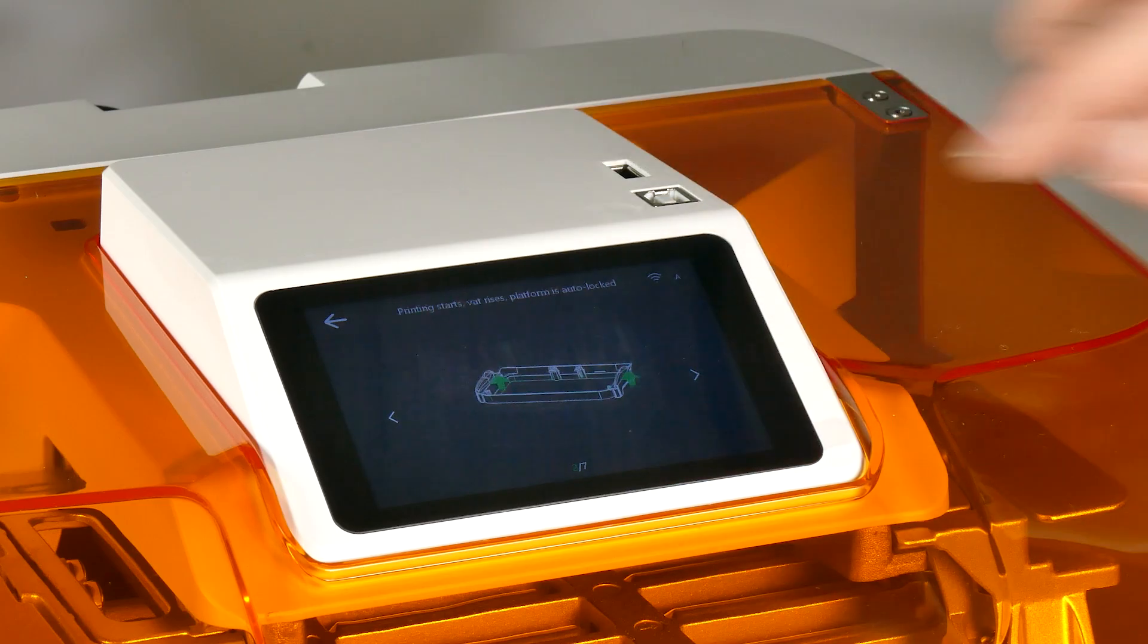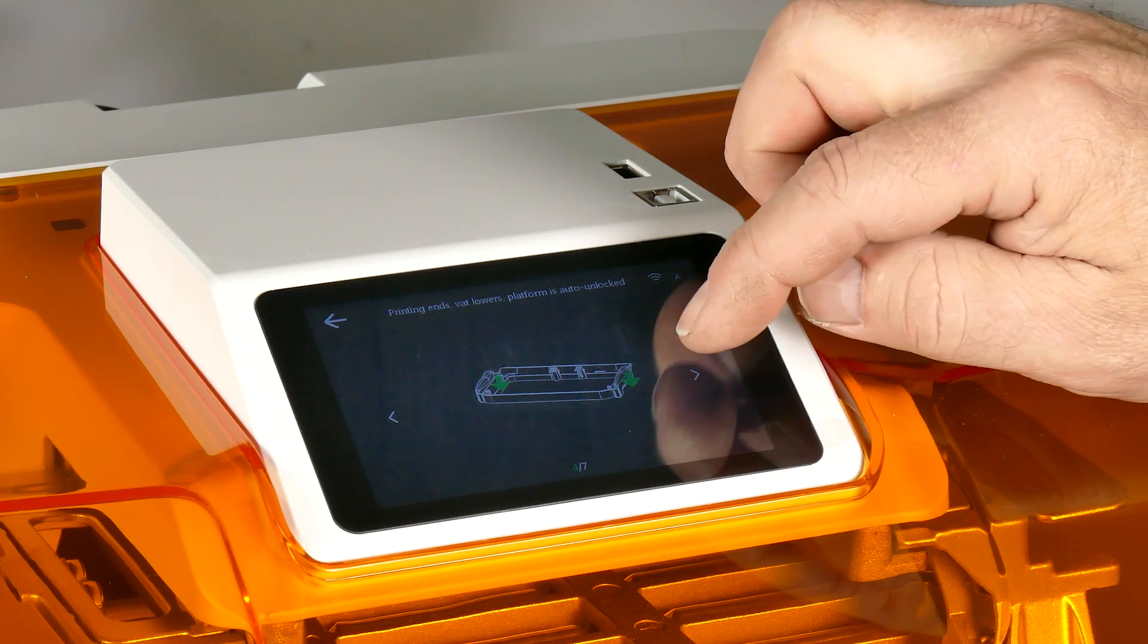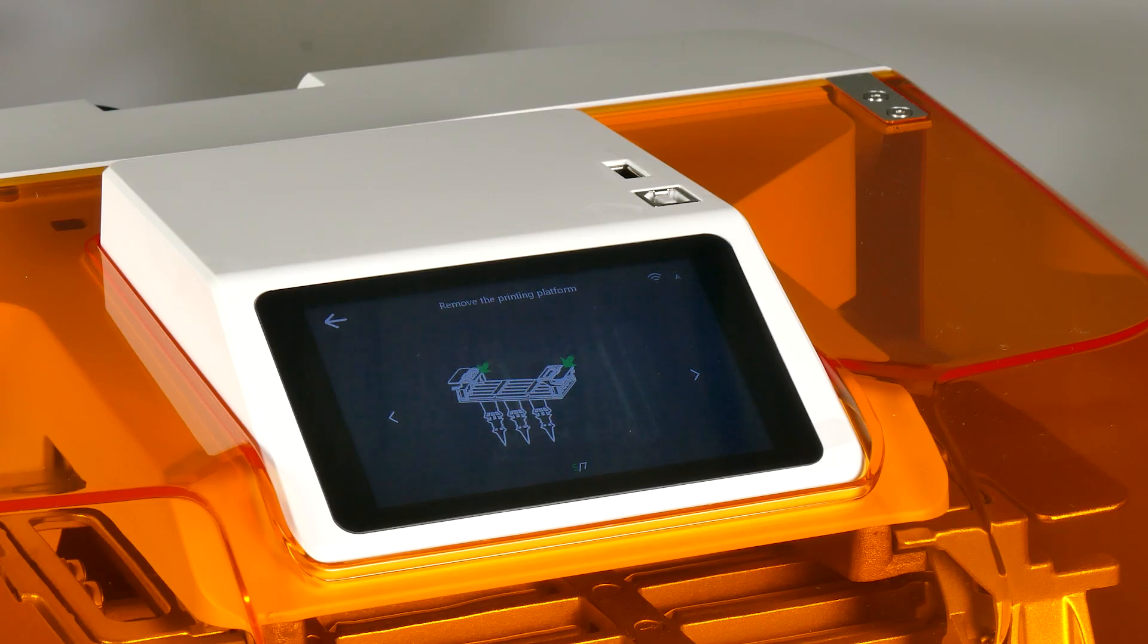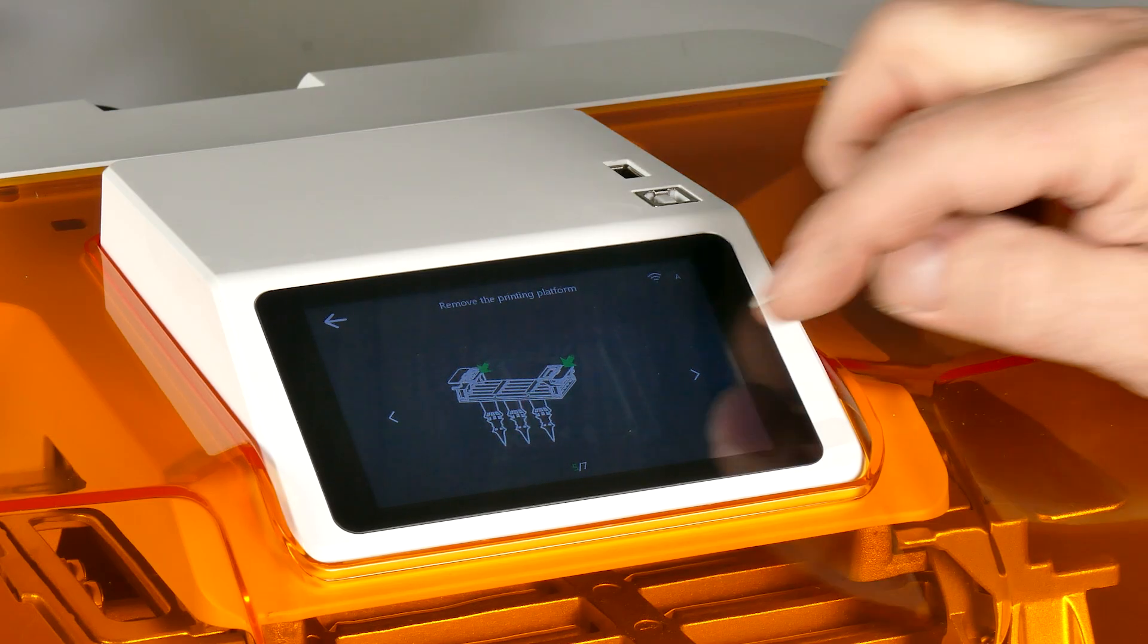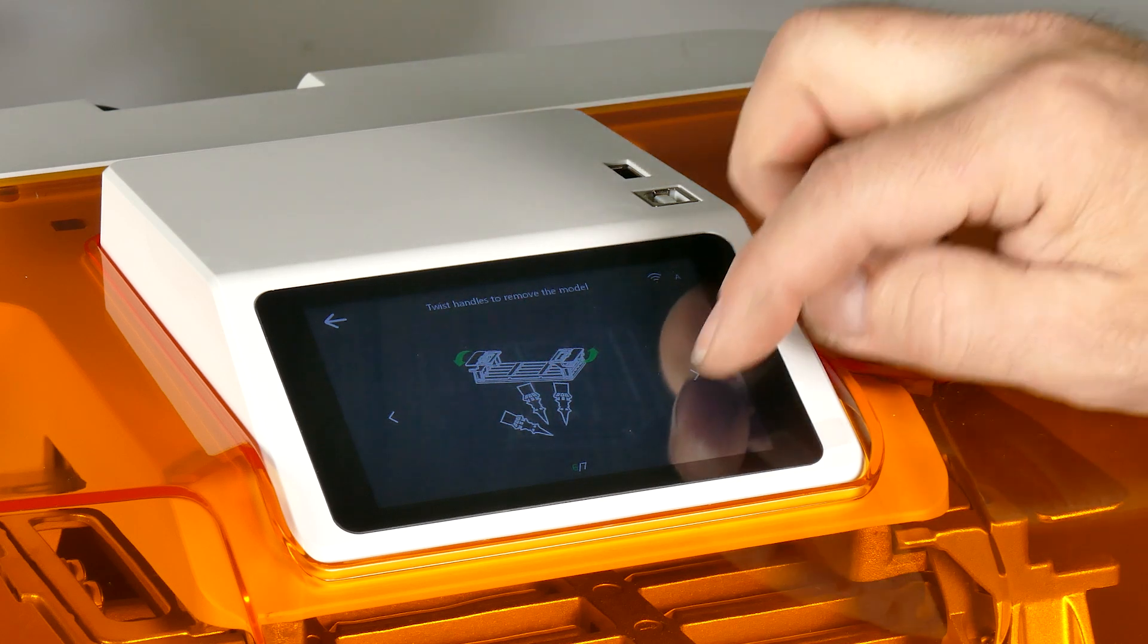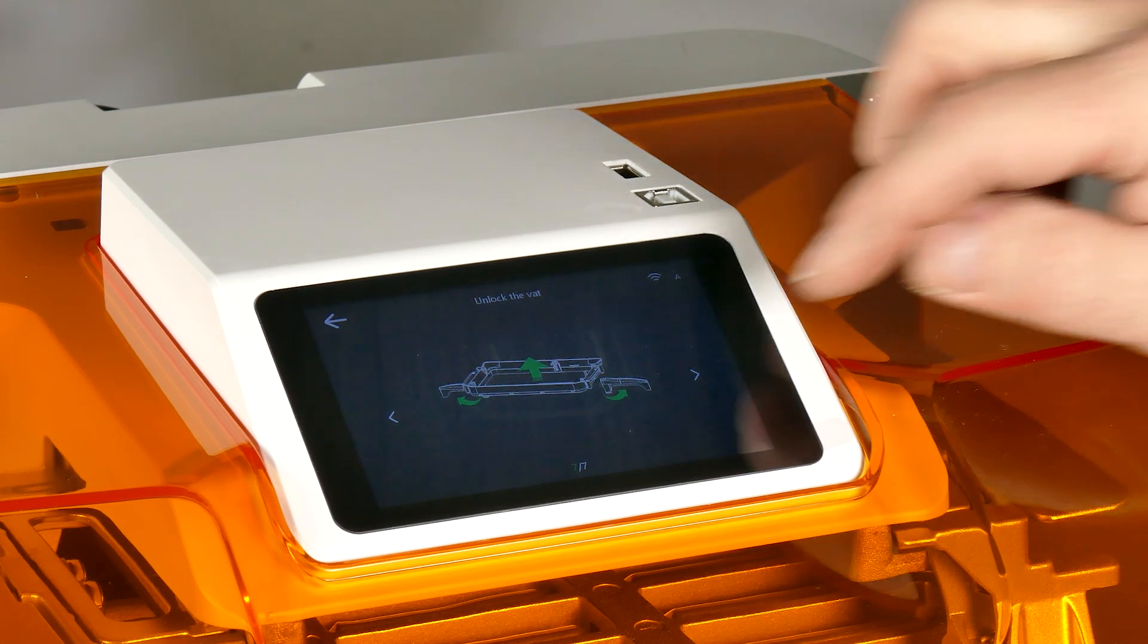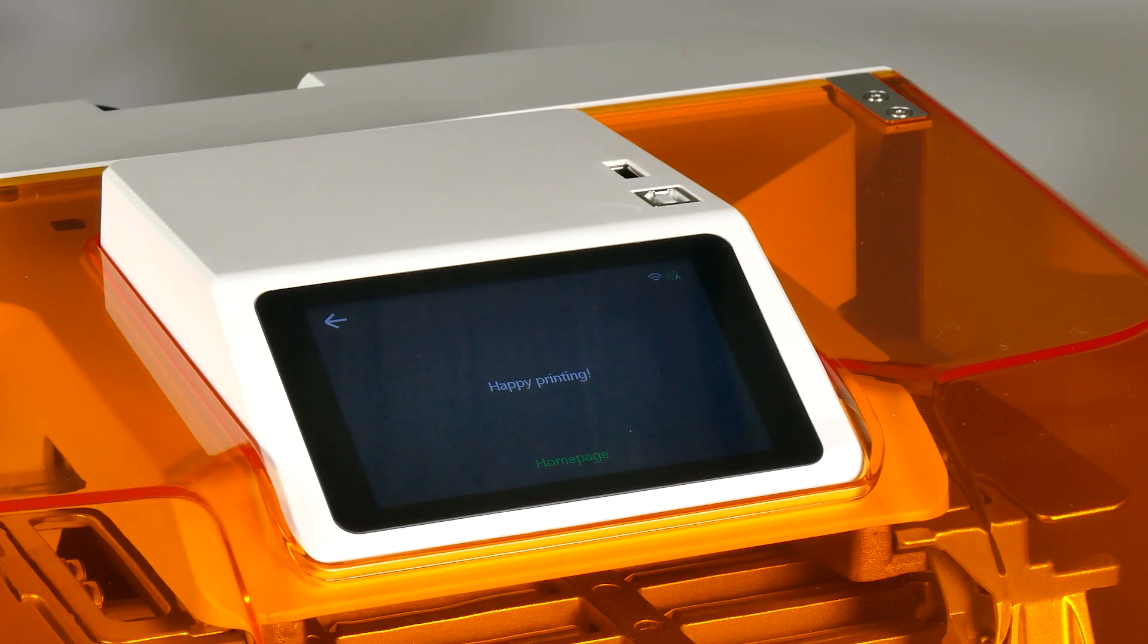Make sure we don't overfill the resin vat. Of course this is just telling us that when the printing starts the build plate will automatically lock, and when it's finished it will also automatically unlock. The final three steps are telling us how to remove the build plate, how to take the model off by twisting the build plate, and finally how to remove the vat. And finally they wish us happy printing. And that viewers is the whole setup process.